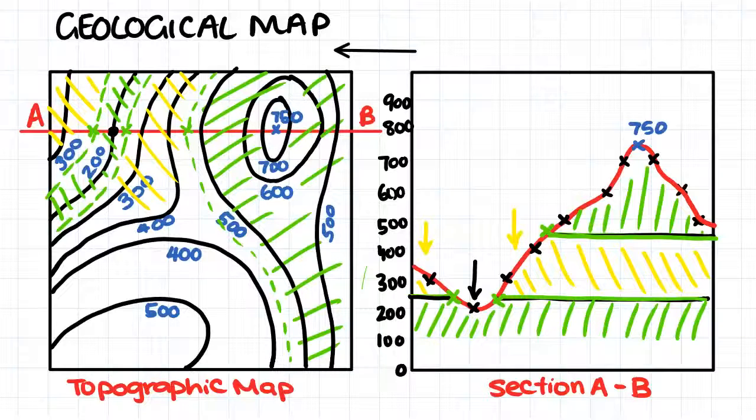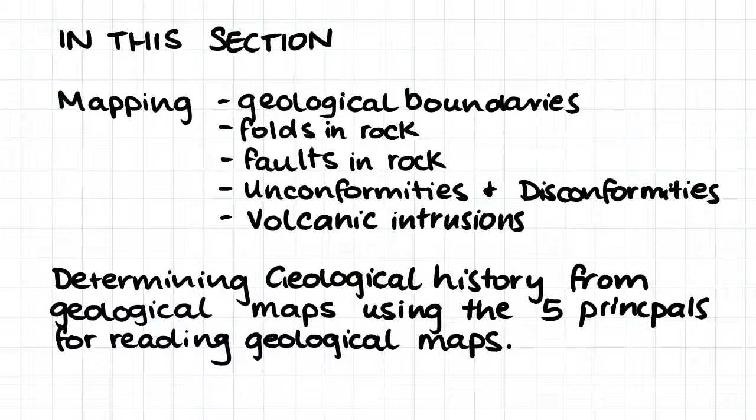And in this section, we will go into a lot of detail about how we map different structures that occur in the geology below the surface of the Earth. So now we have been introduced to geological mapping and topographic mapping. In this section, we will go into detail about mapping geological boundaries, folds in rock, faults in rock, unconformities and disconformities, and how to map volcanic intrusions.